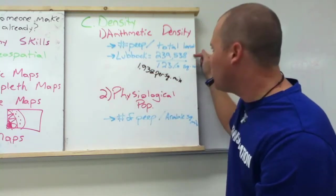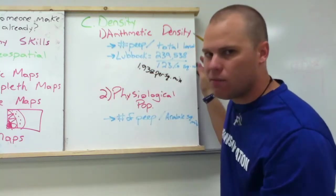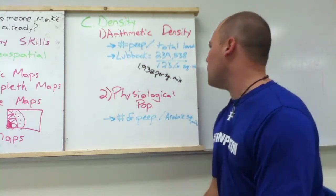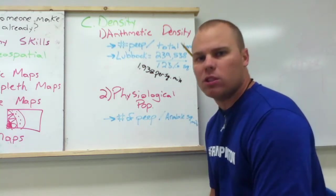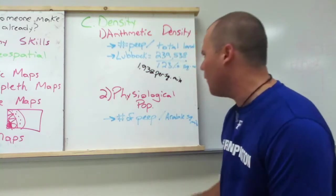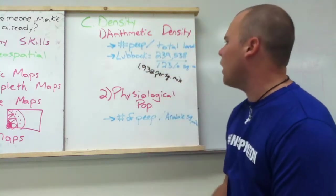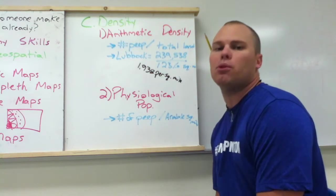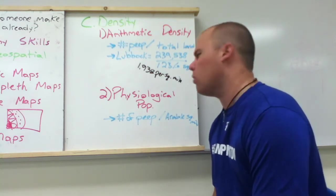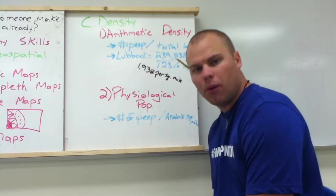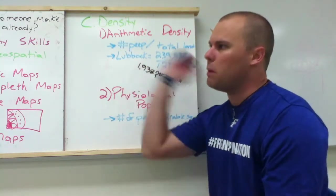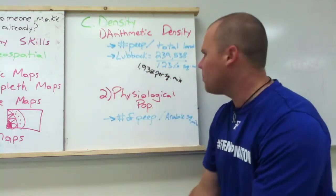The city of Lubbock is pretty spread out. You take that and average it out and you've got 1,938 people per square mile. Now you might think every mile you travel there's 1,900 people — no. It's more like looking at a square mile, which is much bigger than just a mile across an area.